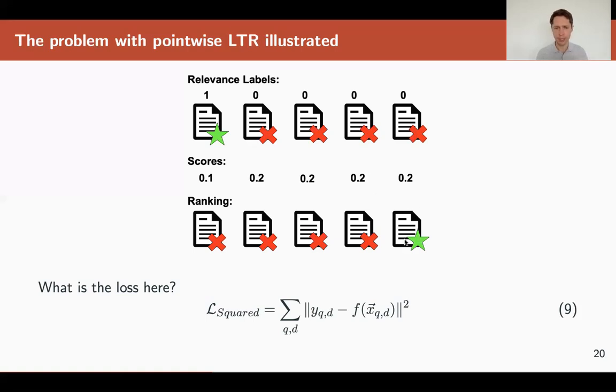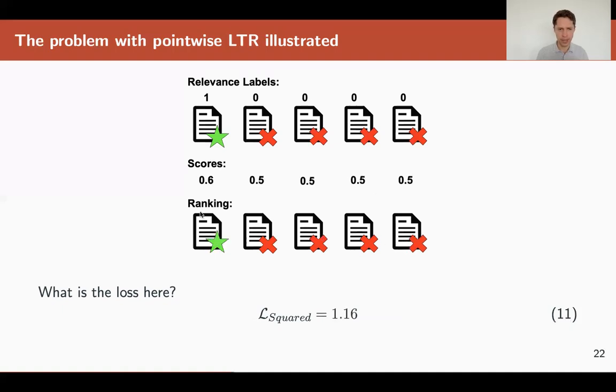Before, we had this on top. So this ranking was correct, but the loss was large. In this case, the loss is actually smaller, 0.97 instead of 1.16.